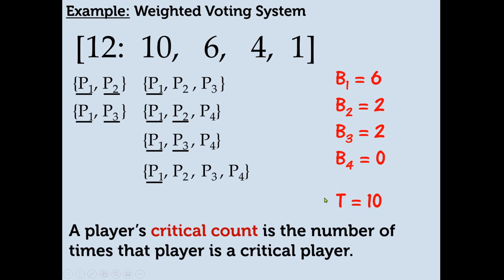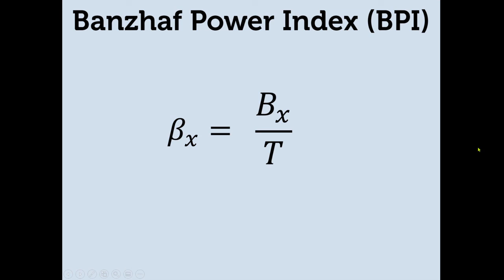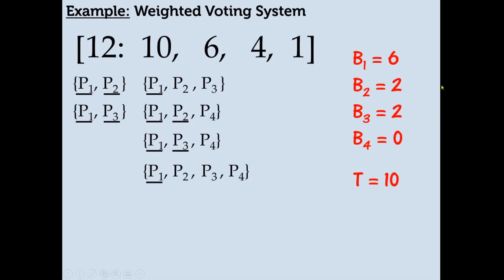Capital T is the total number of critical counts, found by adding up each player's critical count. The Banzhaf Power Index notation is beta-sub-x, where x is the player's number. The formula is B-sub-x divided by T, where B-sub-x is the player's critical count and T is the total number of critical counts. For example, Player 1's Banzhaf power would be 6 divided by 10, which reduces to 2/3.